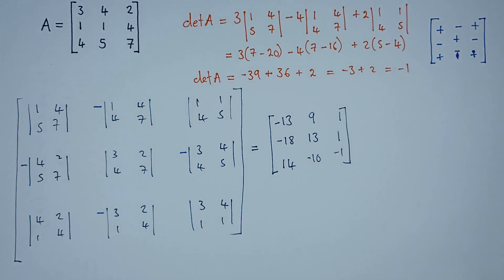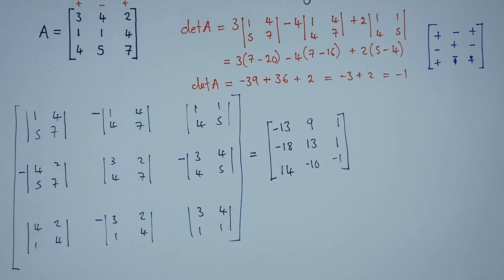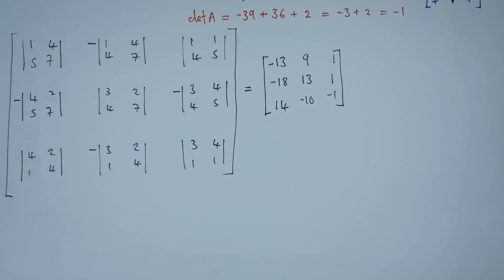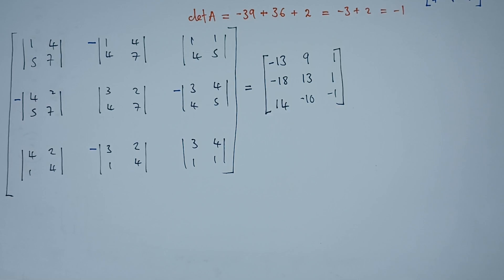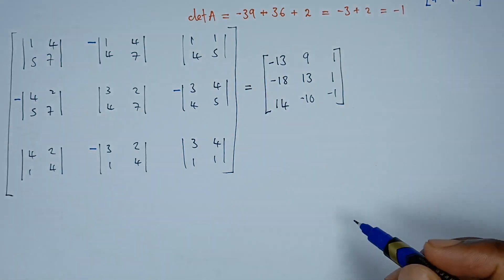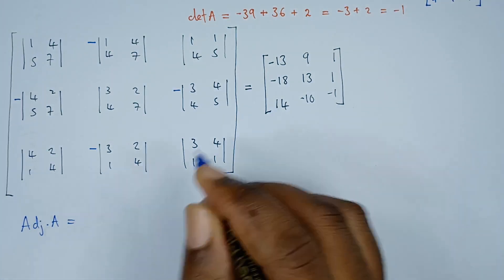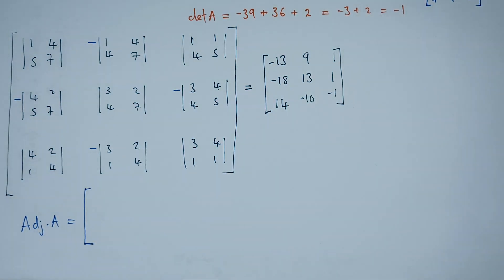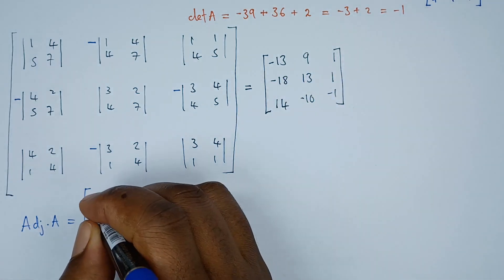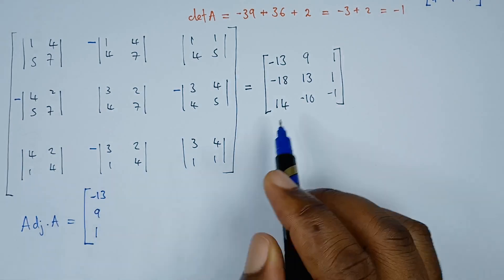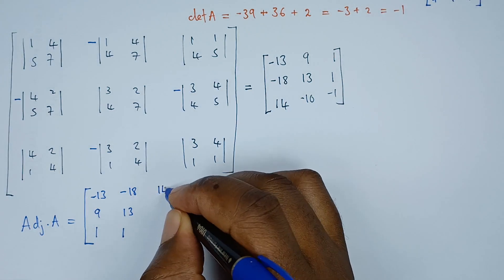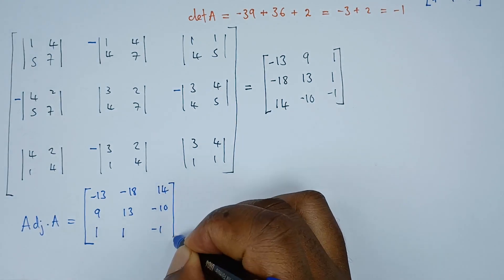Now this cofactor matrix we get has to be transposed. Once we transpose it, the matrix we get is the adjoint. So the adjoint of matrix A equals the transpose of the cofactor matrix. Transposing it: the first row becomes a column — −13, 9, 1. The second row becomes a column — −18, 1, 13. The third row becomes a column — 14, −10, −1. This transpose gives us the adjoint.